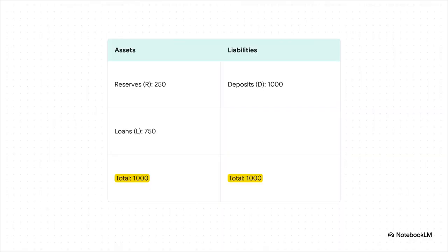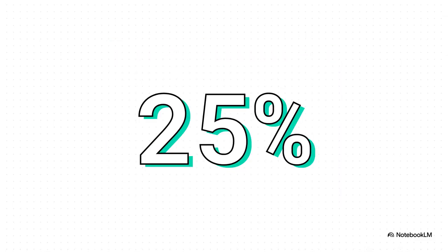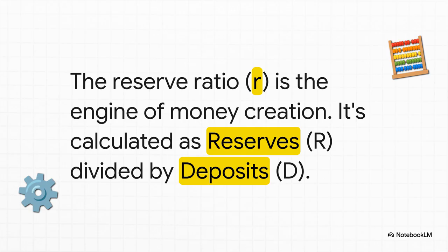Let's look at a simplified bank balance sheet. On the right, under liabilities, the bank owes 1,000 shekels — that's the deposits D. On the left, under assets, it kept 250 in its vault as reserves R, and loaned out the other 750, L. Both sides add up to the same total. The bank's reserve ratio is 250 divided by 1,000, which equals 0.25, or 25%. That gives us our second key formula: the reserve ratio, little r, equals reserves R divided by deposits D. And this simple ratio is the real engine of money creation.